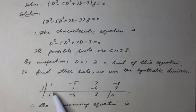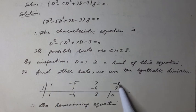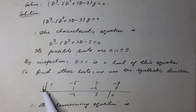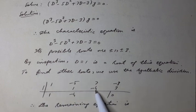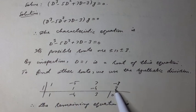We write the coefficients as 1, −5, 7, −3, and use 1 as the root. Then: 1 times 1 equals 1; −5 plus 1 equals −4. Next, −4 times 1 equals −4; 7 minus 4 equals 3. Then 3 times 1 equals 3; −3 plus 3 cancels to zero.